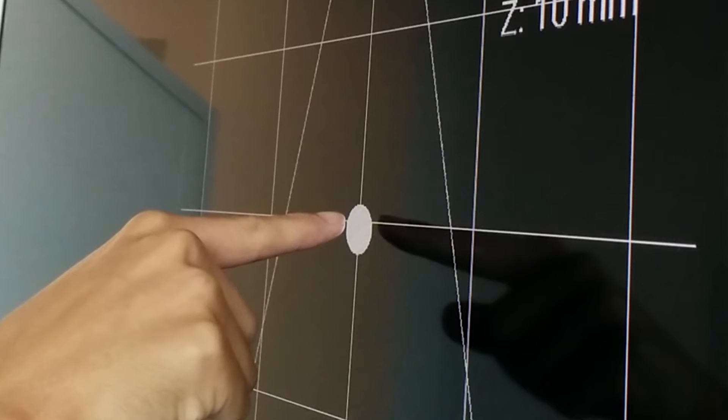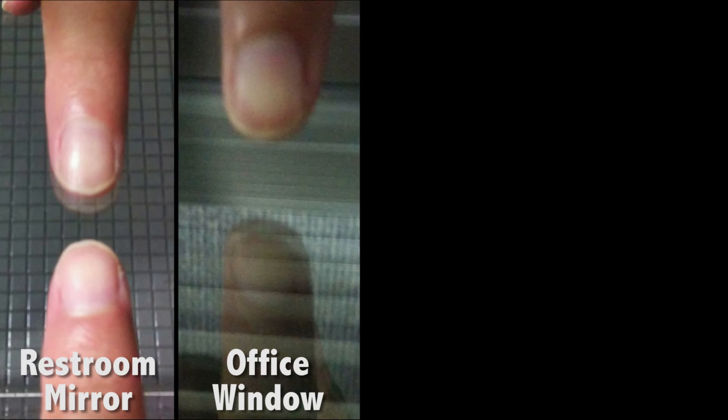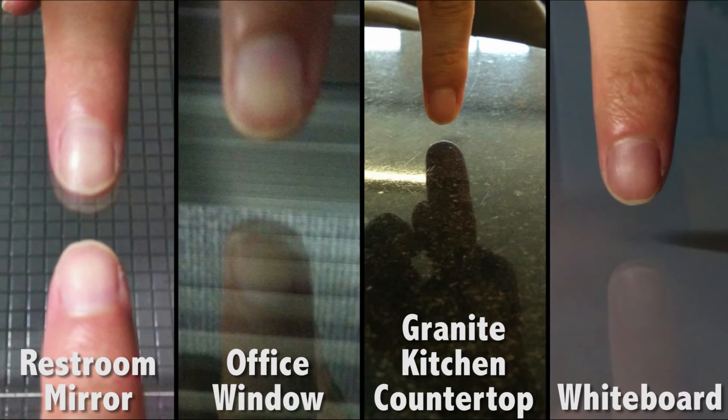Glossy surfaces with reasonable amounts of reflection are very common in today's environments. Surfaces like mirrors, office windows, granite kitchen countertops, and even whiteboards exhibit some reflection. This implies SymmetraSense can enable natural interactions in many new scenarios with just a simple smartphone.